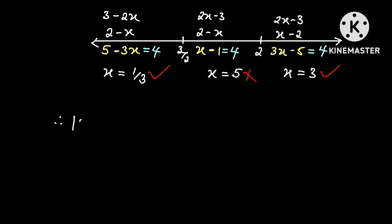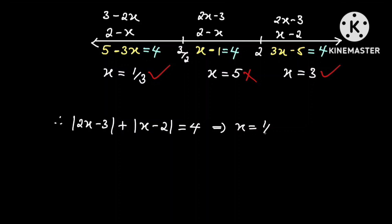Therefore, if the absolute value of 2x minus 3 plus the absolute value of x minus 2 is equal to 4, then x will be equal to one third or x will be equal to 3.